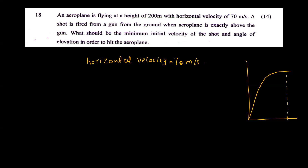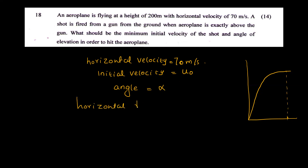Let's define the initial velocity as u0 and the angle of elevation as alpha. For the horizontal component, the horizontal distance is equal to the horizontal velocity multiplied by time, which equals 70t.